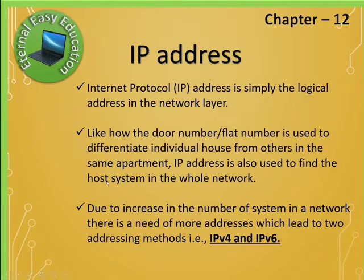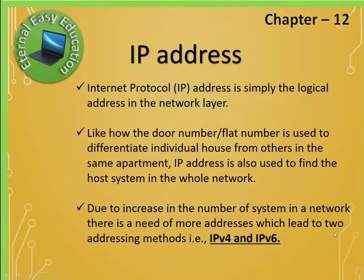Without an IP address we cannot communicate between computers. A network is a collection of computers, and to communicate from one computer to another we need an address — that is the IP address, which is a number. Due to the increase in the number of systems in a network, there is a need for more addresses, which led to two addressing methods: IPv4 and IPv6.